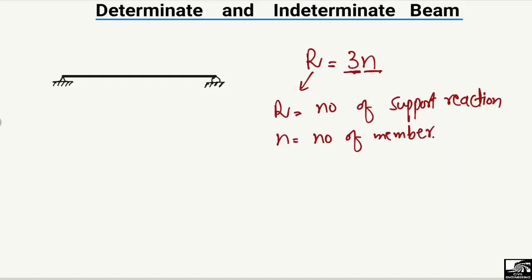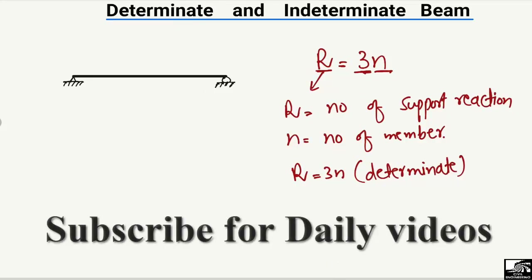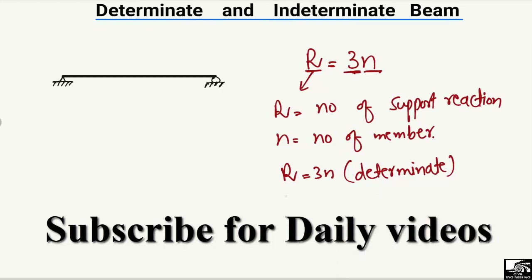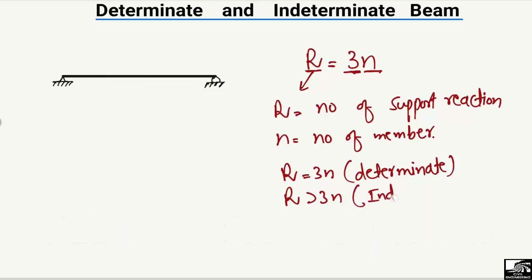So, if r — the number of support reactions — is equal to 3n, then such a beam is known as a determinate beam. When r is greater than 3n, it is known as an indeterminate beam. And when r is less than 3n, such a beam is known as an unstable beam.